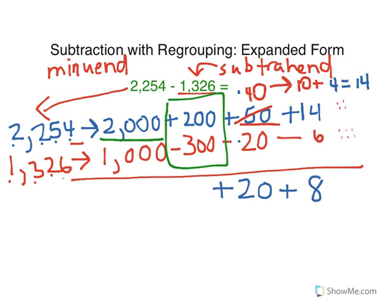I can borrow from 2,000. In fact, I'm going to take 1,000 away. So 2,000 minus 1,000 equals 1,000. I'm going to add the 1,000 over here. 1,000 plus the 200 that's already there will give me 1,200.